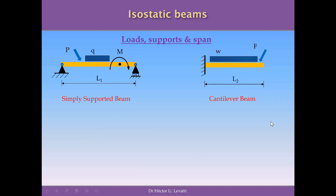First, I want to introduce these two beam types. The first is called the simply supported beam. This yellow rectangle represents the beam itself, which has a pin support on the left and a roller on the right extreme. It is subjected to several types of loads: a punctual inclined load, a uniform distributed load Q (UDL), and a moment applied at a point. The span of this simply supported beam is L1.